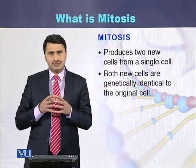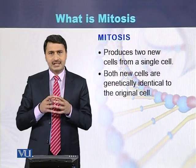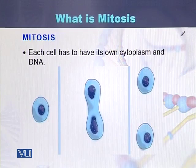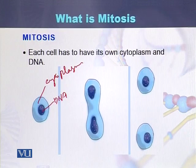Mitosis produces two cells from one cell; both cells are identical to the mother cell. Here we can see the diagram where a single cell has been shown with its cytoplasm and its DNA. This is the cytoplasm of this cell and this is the DNA or the genetic material of this cell. This cell, as a result of mitosis, converts into two cells.